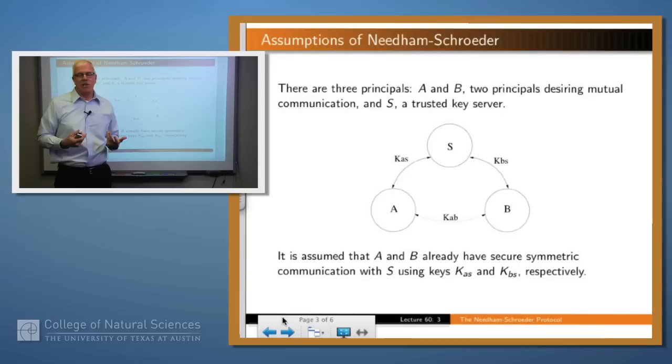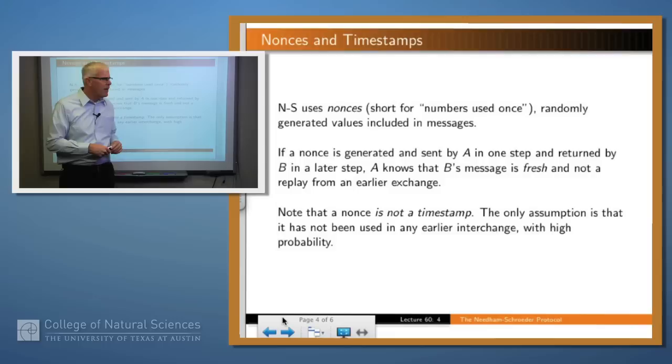There are three parties involved in this protocol. There's A and B, the two parties that want to communicate, or actually more correctly, A wants to communicate to B. B doesn't know this necessarily. But then there's a third party, S, and S is the trusted key server. And the role of S is to generate a new session key so that A and B can communicate and disseminate the key to the two parties. It's assumed that A and B already have keys which allow them to communicate securely with S, but they don't share a key between themselves.